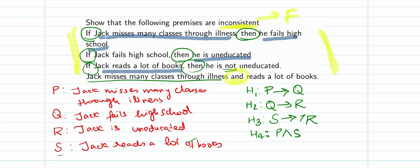Using these four hypotheses, I need to show that the premises are inconsistent. That means they must lead me to a conclusion c which is false. The problem does not give the conclusion directly — it is a hidden point. If it is inconsistent, the conclusion to be arrived at is going to be false.